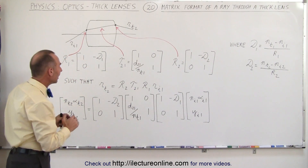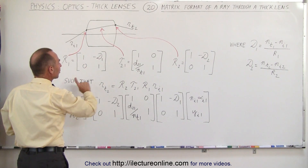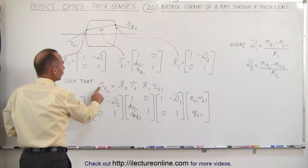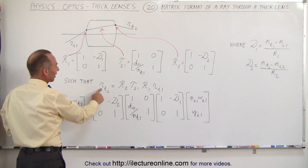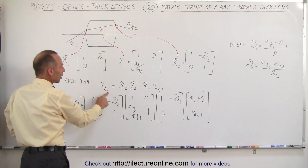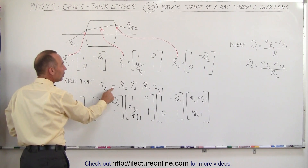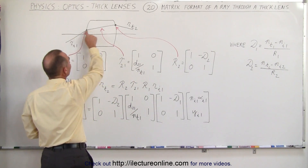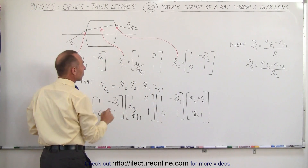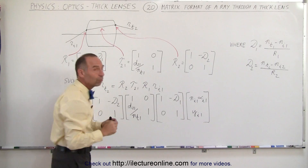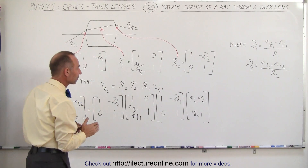We can then write the whole matrix system like this: the information of the ray exiting the second boundary equals the incident matrix across the first boundary, times the multiplication of these three matrices — and notice the order that they're in.